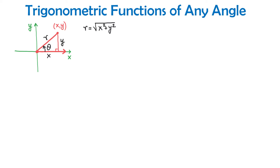If we plot this point in any other quadrant, then depending on the quadrant, x or y can be negative. However, R represents the distance from the origin to the point, and regardless of the quadrant, R will always be positive.